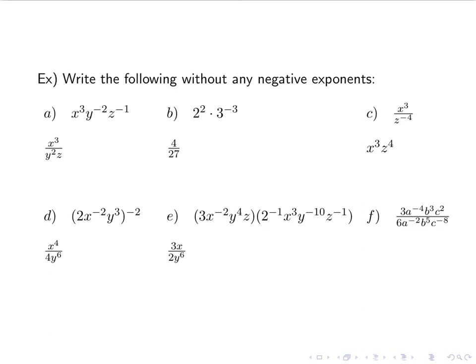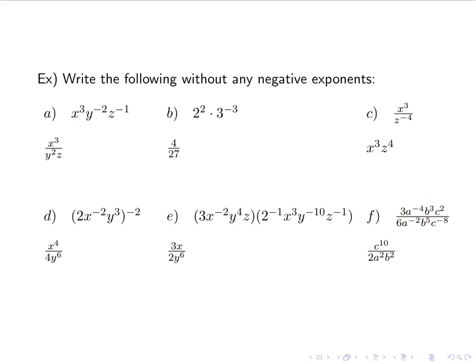For the last one, we have division, so exponent-wise we subtract them. Starting with coefficients: 3 over 6 is 1 over 2. For the a's, negative 4 minus negative 2 is negative 4 plus 2, which is negative 2, so it goes on the bottom. For the b's, 3 minus 5 is negative 2 — negative means it goes on the bottom. For the c's, c squared over c to the negative 8: 2 minus negative 8 is 2 plus 8, which is 10 — positive, so it goes on top. So we get c to the 10th over 2a squared b squared.